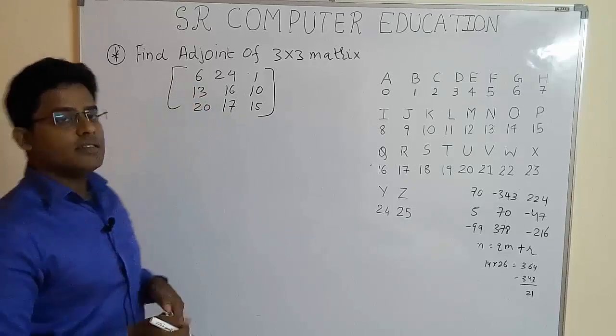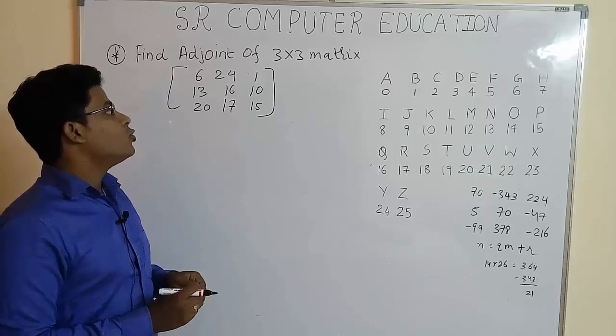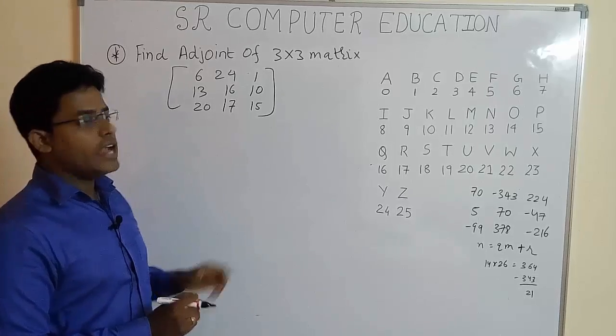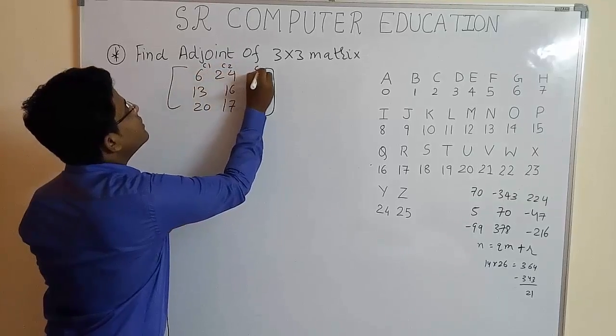The given matrices is 6, 24, 1, 13, 16, 10, 20, 17 and 15. This is your column 1, this is your column 2 and this is your column 3.